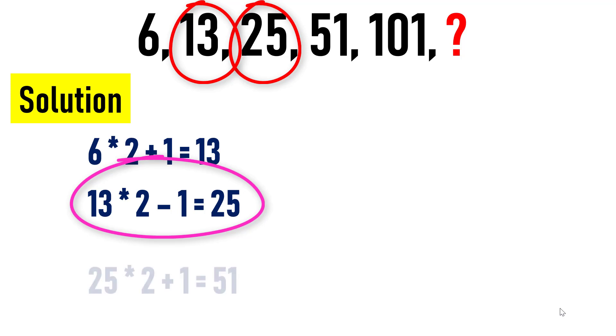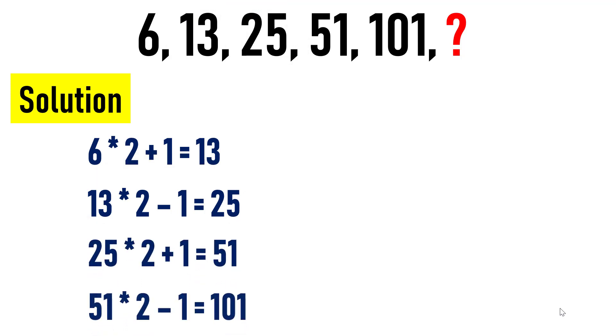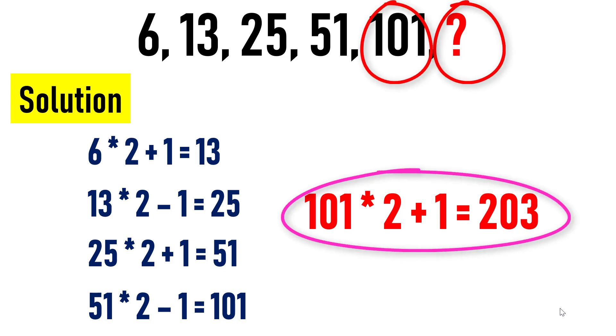To achieve the next number in the sequence, the previous number 101 is multiplied by 2, and the resulting number 202 is added with 1, which results in 203. Here 1 is added because, as we can see in the pattern, to achieve the previous number, subtraction operation was already performed, and as per the pattern, addition and subtraction of 1 is done alternately.